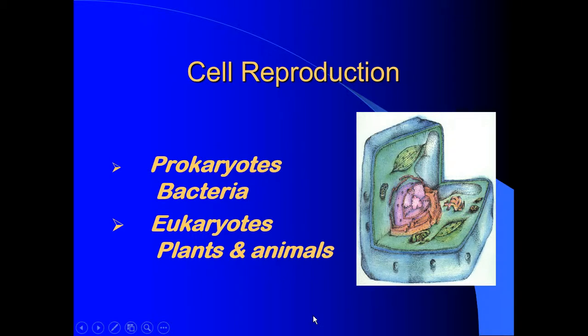Cell reproduction. The cell cycle is also known as cell reproduction. In prokaryotes and eukaryotes, this process happens all of the time.